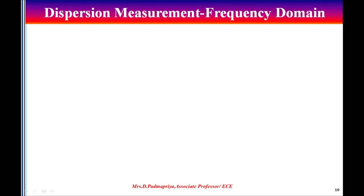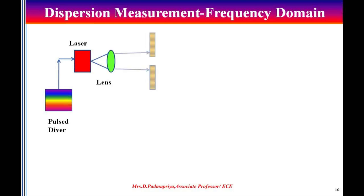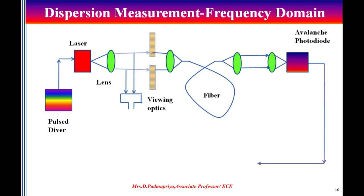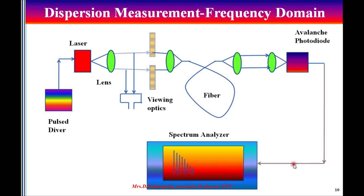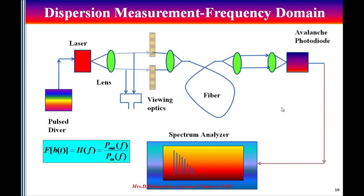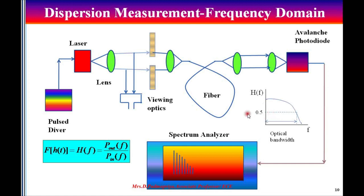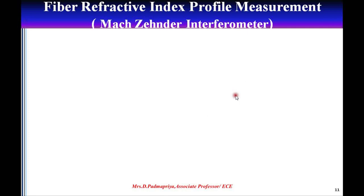Next is dispersion measurement in the frequency domain. The same setup is used as before, except that instead of a sampling oscilloscope, a spectrum analyzer is used. The input P_in(f) is measured by replacing the test fiber with a short reference fiber, and then the output P_out(f) is measured. The Fourier transform of h(t) is given by H(f) = P_out(f) / P_in(f), where P_out(f) is the output power measured out of the photo detector and P_in(f) is the input power. The optical bandwidth or fiber bandwidth is defined as the lowest frequency at which H(f) decreases or reduces to 0.5.